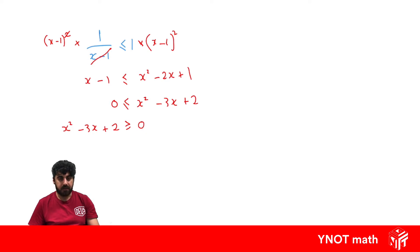And now we can go ahead and factorize and it's just like a normal quadratic inequality. So we're looking for two numbers that multiply to 2 and add up to minus 3, so it's going to be minus 2 and minus 1.